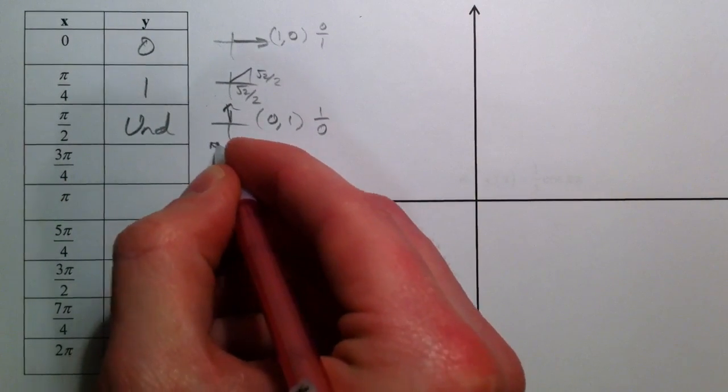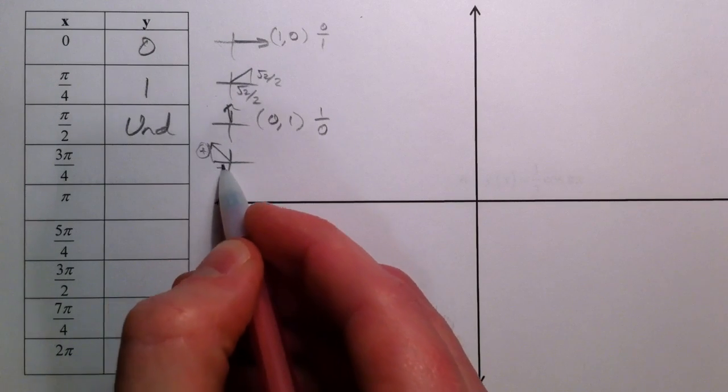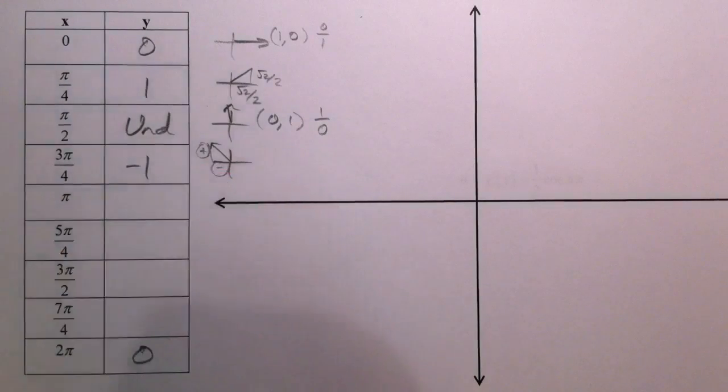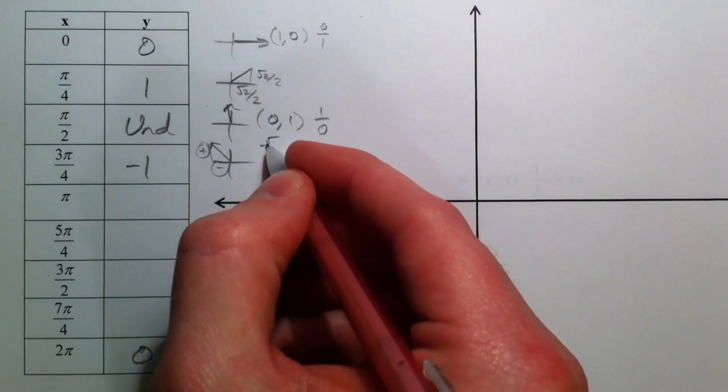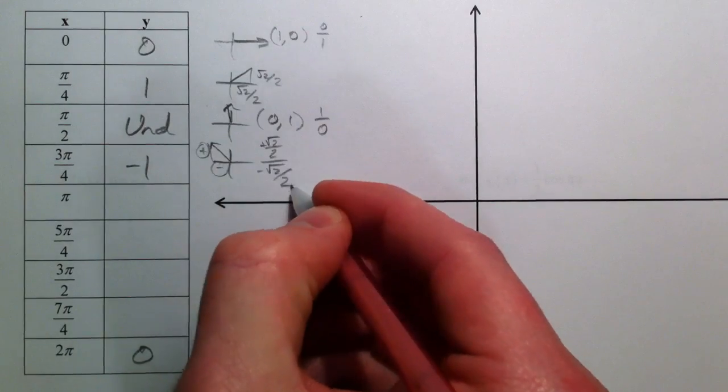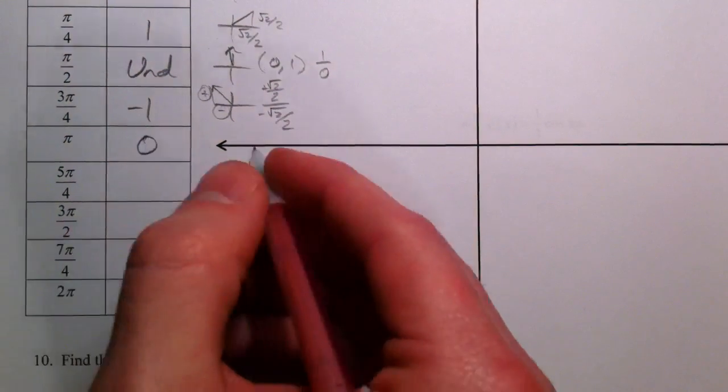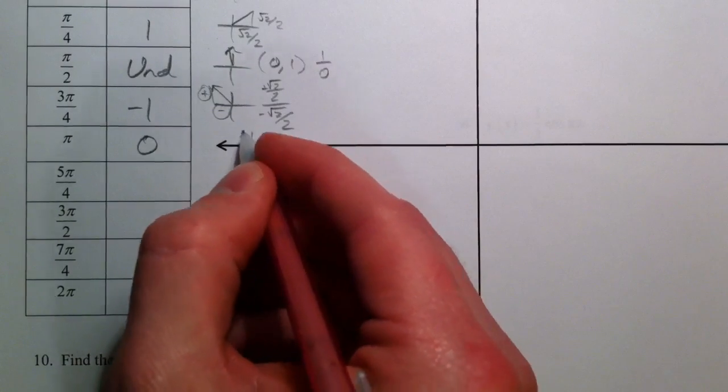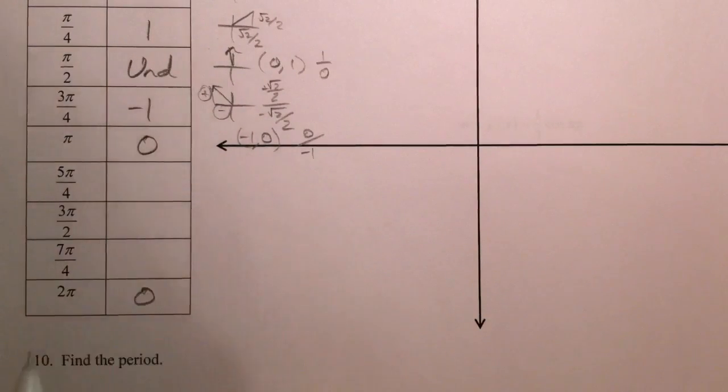3pi over 4, 1 positive, 1 negative, so we get a negative 1. Positive root 2 over 2 divided by negative root 2 over 2. Back to pi, you're at negative 1 comma 0. 0 over negative 1 is still 0.